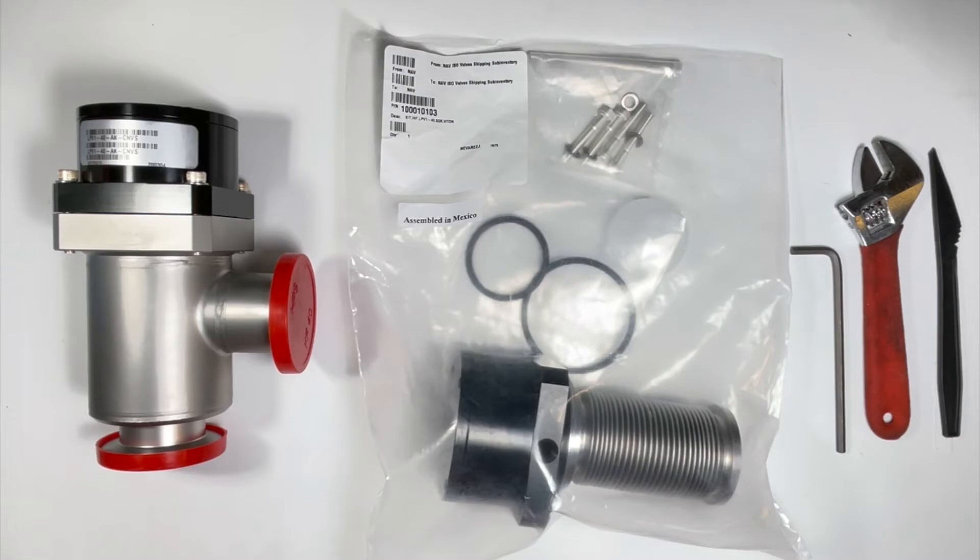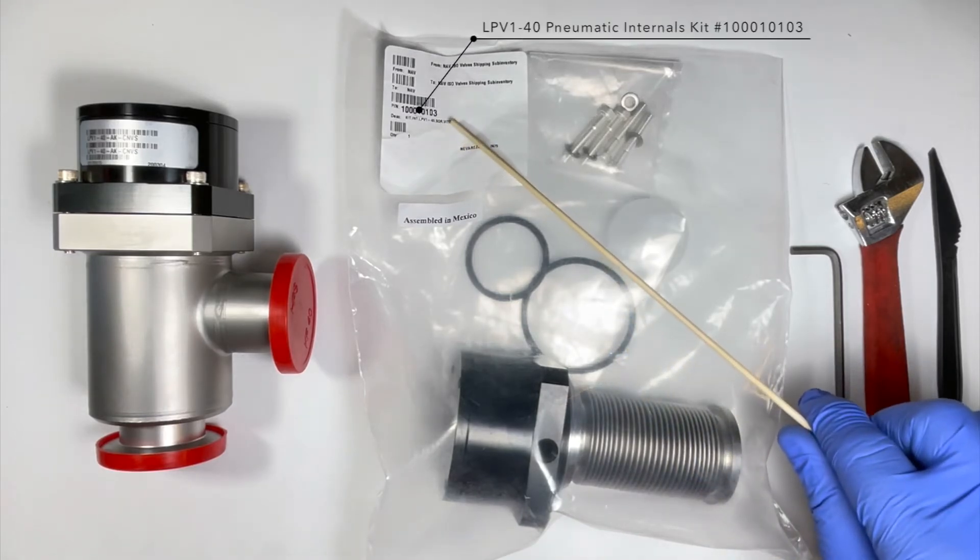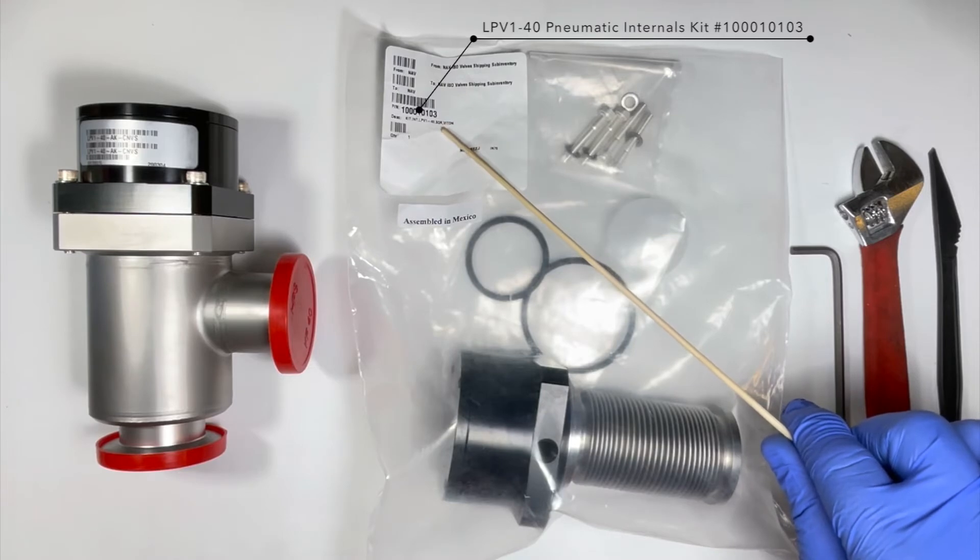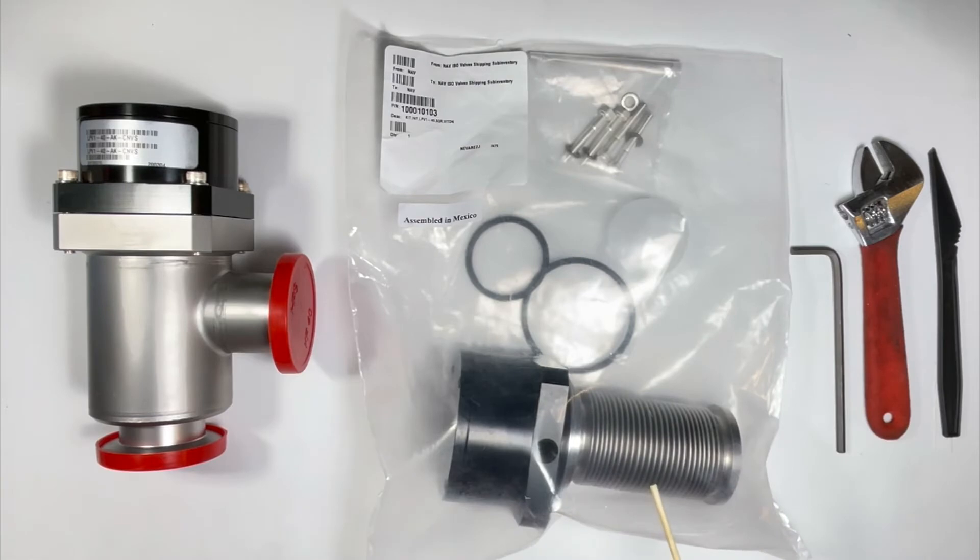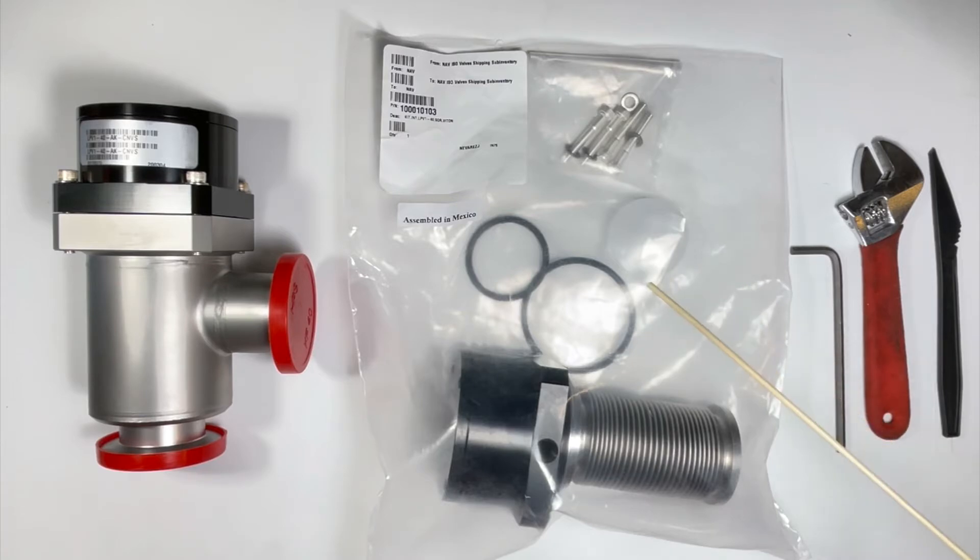The materials needed for this job are the isolation valve—once again, we are using valve number LPV-1-40-AK-CNVS—the LPV-140 pneumatic internals kit number 1-0-0-0-1-0-1-0-3, which includes the internals, replacement O-rings, a small amount of Fomblin vacuum grease to assist in the installation of the O-rings, and replacement silver-coated bolts.